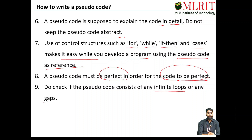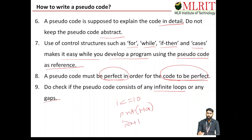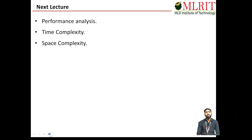A pseudo code must be perfect in order for the code to be perfect — if the pseudo code is perfect, obviously the code will also be perfect. Do check if the pseudo code consists of any infinite loops or gaps. For example, for a loop printing 'hi' while i <= 10, we must increment i by 1 each iteration; if you ignore this, it becomes an infinite loop. In the next lecture, we are going to discuss performance analysis of a program in terms of time complexity and space complexity. Thank you.